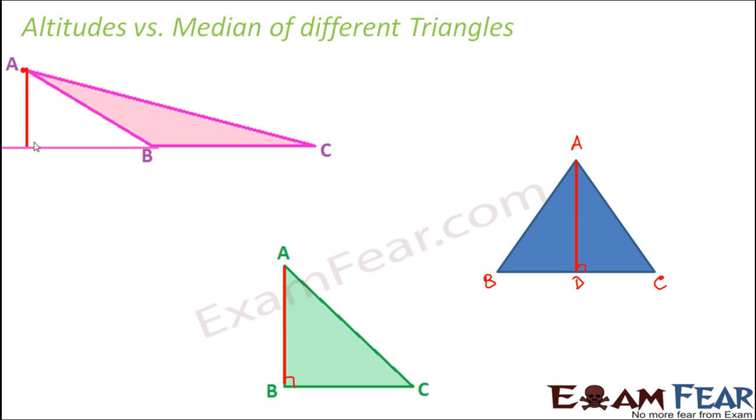So here you see that this is the line which is drawn from point A which is perpendicular on extended BC.